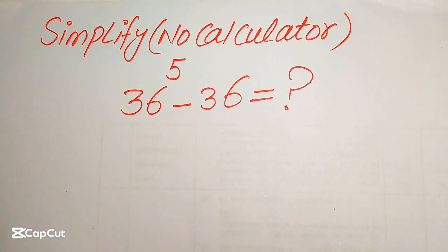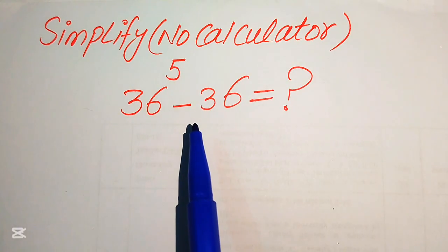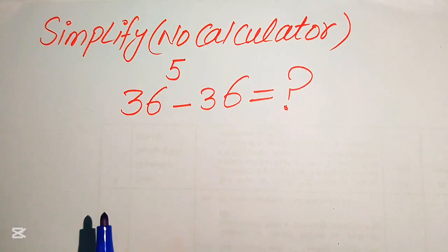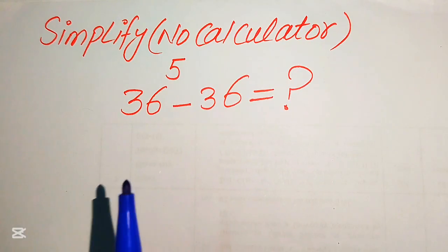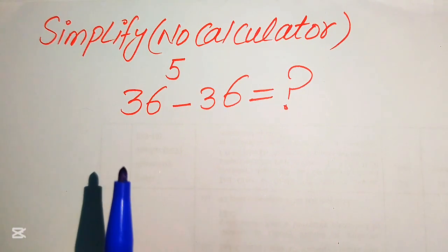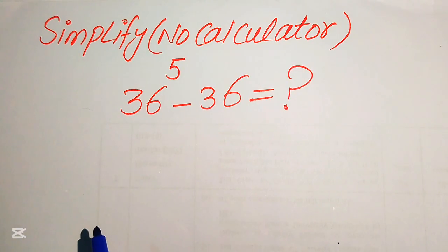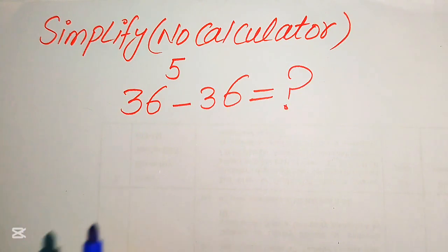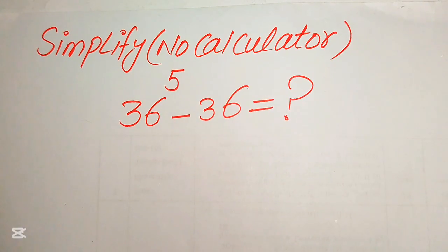Hello everyone. How to simplify this nice algebraic expression: 36 to the power of 5 minus 36. We write this algebraic expression into simplified form without using a calculator, so all working will be shown on paper. I will give you some tricks so you can do all the calculations in your mind without any calculator. I hope you like this video — if you have another method, please write it in the comment section.